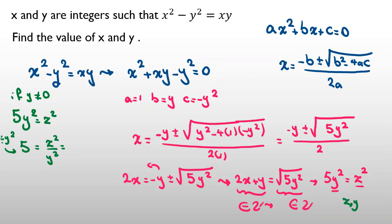And it will be z over y squared. So, we know that it is impossible, because 5 is not a perfect square. So, contradiction. Impossible.